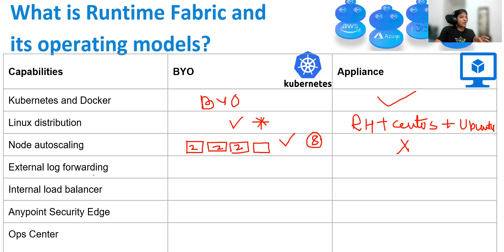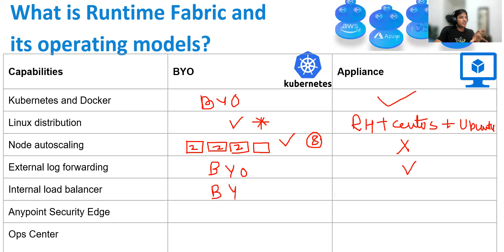For external log forwarding, in self-managed Kubernetes you need to bring your own log forwarder, but in the appliance model it is already included in the software. For the internal load balancer, called ingress: in self-managed Kubernetes you need to configure and bring your own ingress controller, whereas in the appliance model it is included.